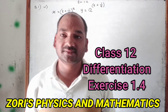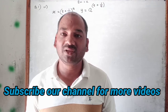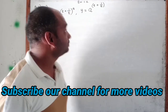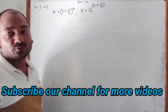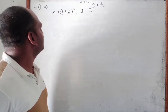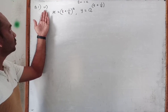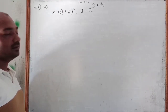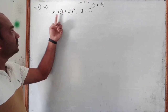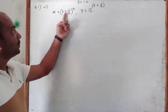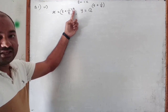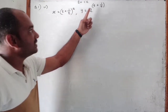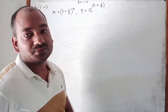Welcome back students! Today we are moving on to question number 6 from exercise 1.4. This is the sixth sub-question from question number 1. Here we have given x is equal to t plus 1 upon t, bracket raised to a, and y is equal to a raised to t plus 1 upon t.